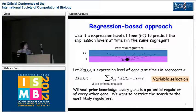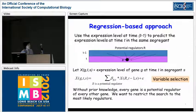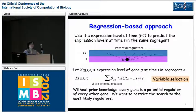In order to infer networks using our time series data, we developed a new method. Our idea is to use the expression level at the previous time point to predict the expression level at the current time point. For each gene G, we find potential regulators R from the previous time point T minus 1. Mathematically, if X is the expression level of gene G at time T in segregant S, we write it as a linear combination of regulator R at time T minus 1 in the same segregant S. We then apply a variable selection method to infer candidate regulators R and compute regression coefficients beta.